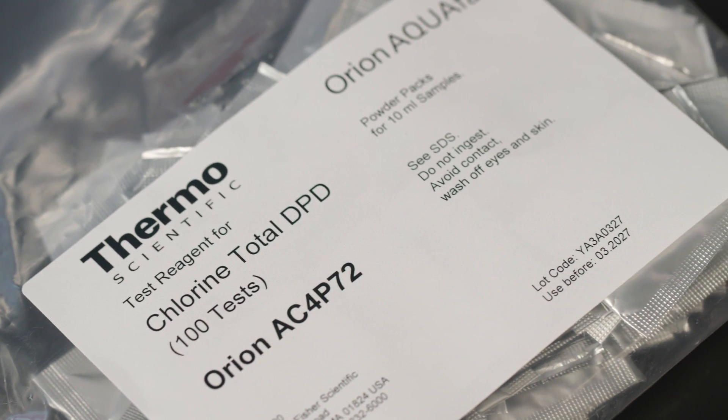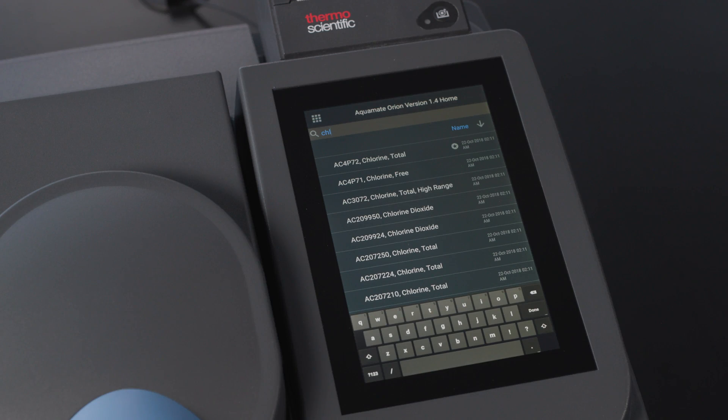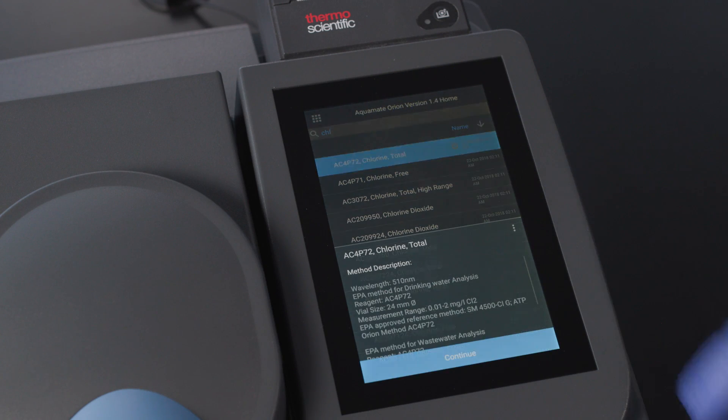We can select method AC4P72, which matches the catalog number of my reagent. When the method is selected, we will find that a lot of information is available in this first screen.